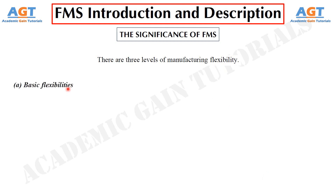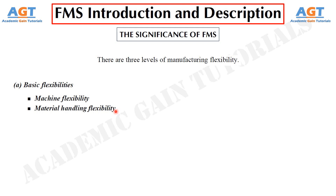This level of flexibility includes machine flexibility, which is the ease with which a machine can process various operations; material handling flexibility, which is a measure of the ease with which different part types can be transported and properly positioned at the various machine tools in a system; and operation flexibility, which is a measure of the ease with which alternative operation sequences can be used for processing a part type.